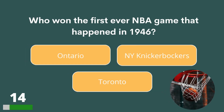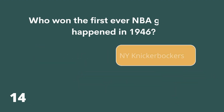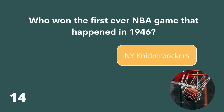Who won the first ever NBA game that happened in 1946? Ontario, New York Knickerbockers or Toronto? The answer is New York Knickerbockers.